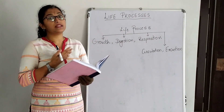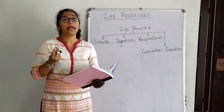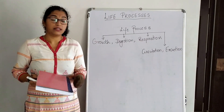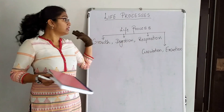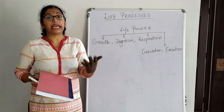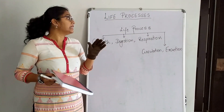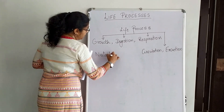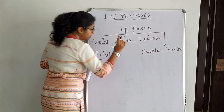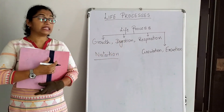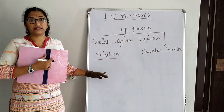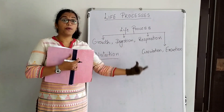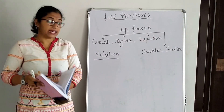To perform life process activities, our body requires some energy. Where do we get this energy from? We get the energy from the food we eat. So the entire process of obtaining energy from food is called nutrition. Our body requires nutrition in various forms. We require nutrition to perform various life process activities like growth and repair of cells. The raw materials which provide nutrition to our body are known as nutrients.